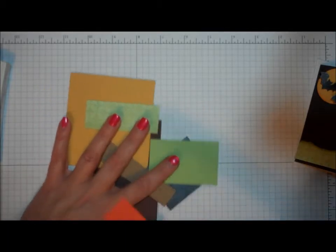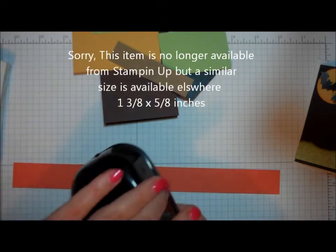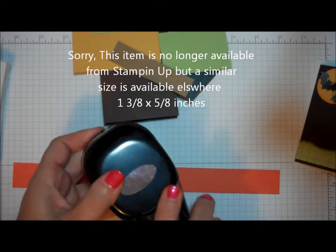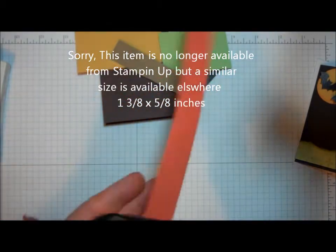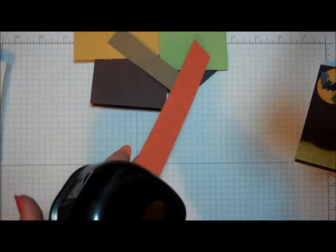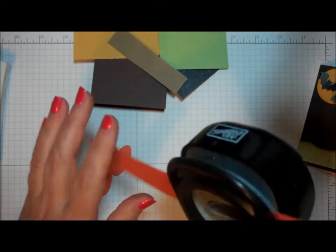I'm going to take my orange. I'm going to set those aside. I'm going to take my orange scrap. And I'm going to use my Stampin' Up! Small Oval Punch. And this is going to be the basis for my pumpkin. So I'm going to punch three of those. This piece of paper is called, the color is called Pumpkin Pie.